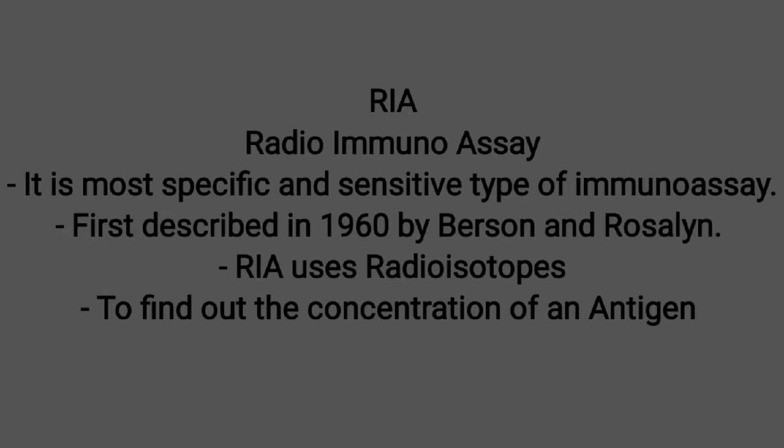So instead of enzymes used in the ELISA technique, RIA uses radioisotopes. In ELISA, we linked enzymes to the antibody for the determination of a particular type of antigen. In RIA, we use radioisotopes. We perform RIA to find out the concentration of an unknown antigen.